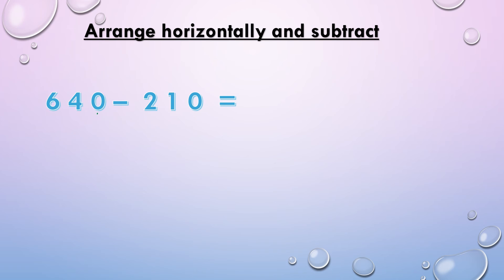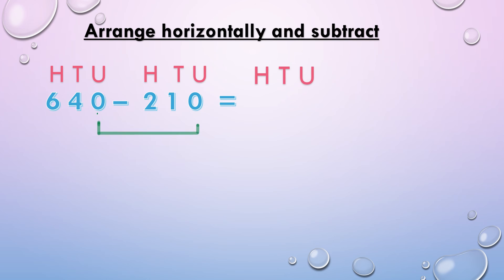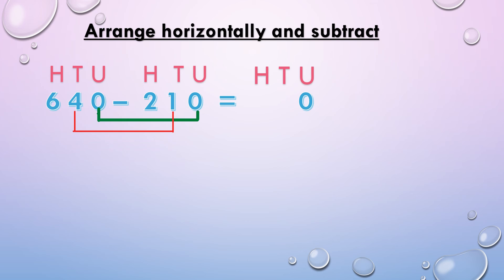Next, 640 minus 210. We write the place values: hundreds, tens, and units, for both the question and the answer. Units place: 0 minus 0, we get 0. Tens place: 4 minus 1, we get 3. Hundreds place: 6 minus 2, we get 4. So 640 minus 210, we get 430.